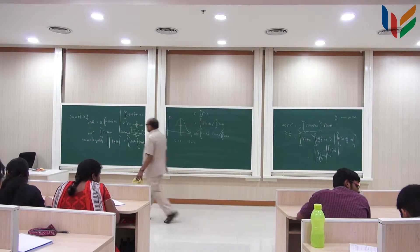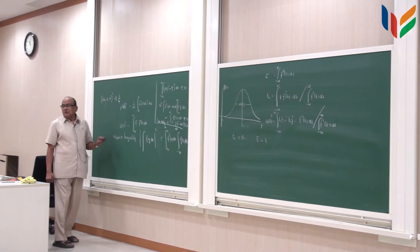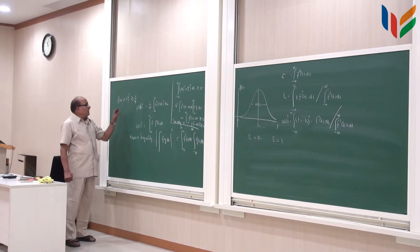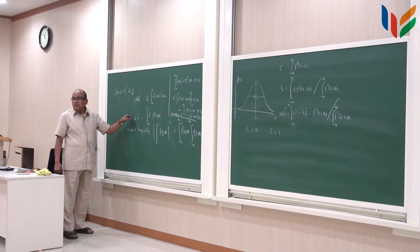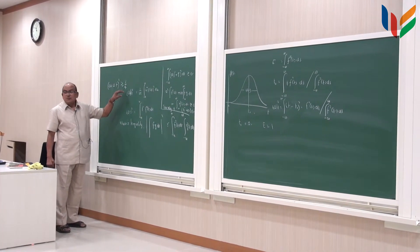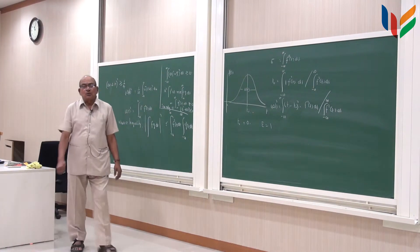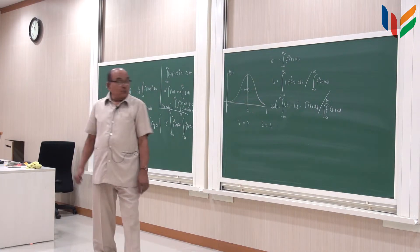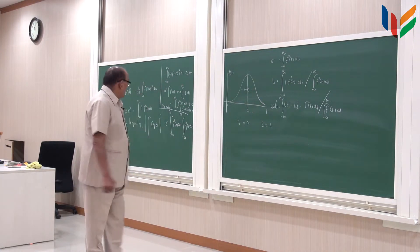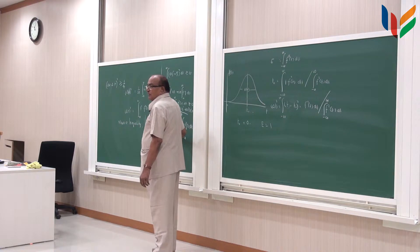So the result is that the width, by this definition — the similar time duration definition — the product of the squares must be greater than or equal to one fourth. And when does this inequality become an equality?